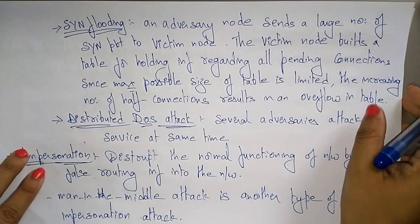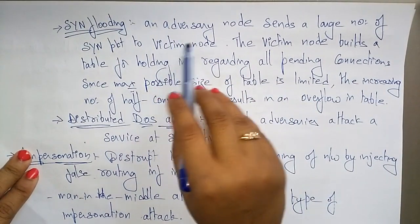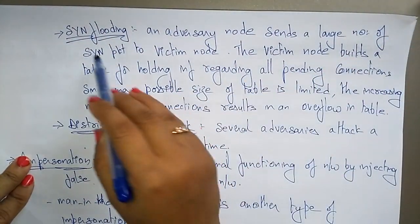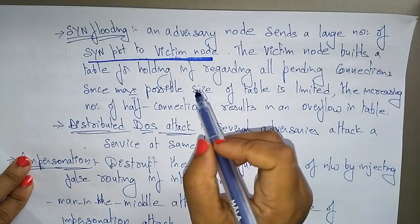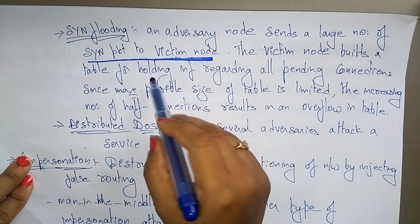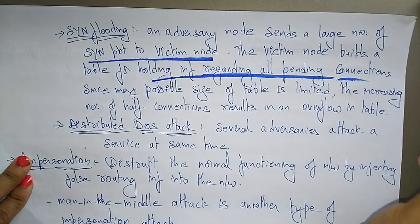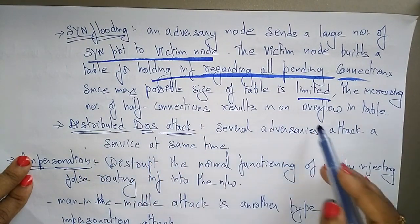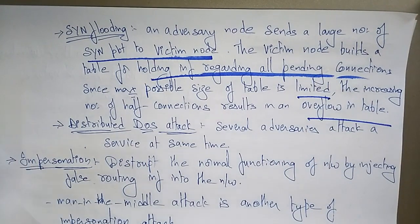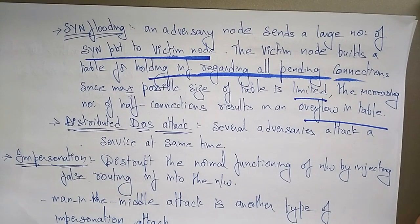Another denial of service attack is SYN flooding. The adversary node sends a large number of SYN packets to victim nodes. The victim node builds a table to hold information about all pending connections. Since the maximum possible size of this table is limited, the increasing number of half-open connections results in a table overflow — that is SYN flooding.